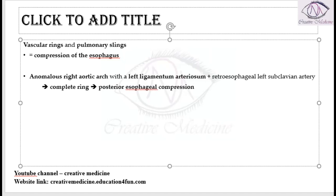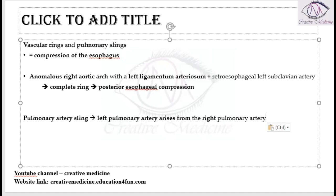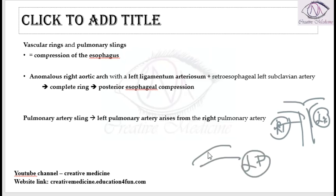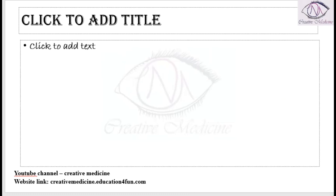Pulmonary arterial slings also cause compression of the esophagus. Normally, the pulmonary trunk forms both the left and right pulmonary arteries. In pulmonary arterial sling, however, the right pulmonary artery arises from the left pulmonary artery, forming a sling-like ring structure that compresses the esophagus.